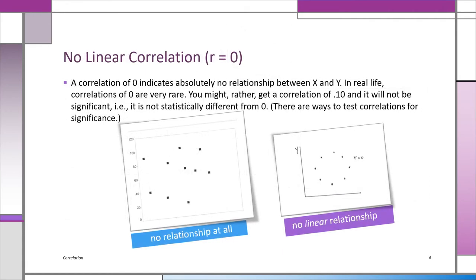What does an R of zero mean? It means there's no linear relationship between X and Y, though in the real world you very rarely see an R of exactly zero. Looking at the two scatter plots: on the left, it's just a bunch of random points; on the right, there's a perfect circle — there's some kind of relationship, but R is zero because there's no linear relationship. If you take random numbers, R might be 0.02 or 0.03. When testing for significance, you want to know if R is statistically different from zero.